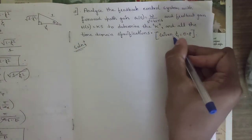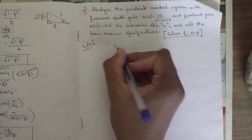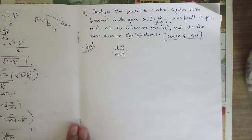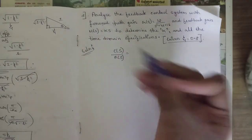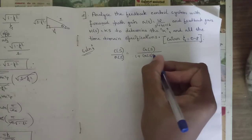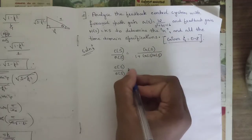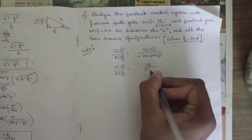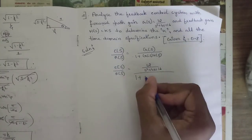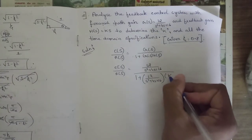First, write the given data to avoid confusion: zeta = 0.8. Now find the transfer function C(s)/R(s). Since G(s) and H(s) are given, the formula is G(s) divided by 1 plus G(s)·H(s). So C(s)/R(s) equals 12/(s² + 4s + 16) divided by 1 plus [12/(s² + 4s + 16)] into Ks.